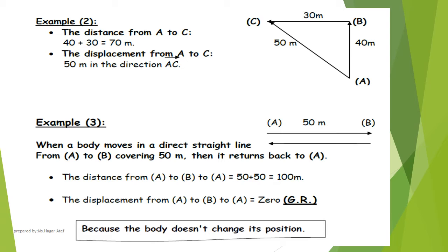Therefore, the distance covered by the car from point A to point C equals AB plus BC equals 40 plus 30 equals 70 meters, in the northwest direction.